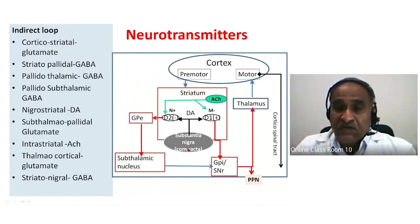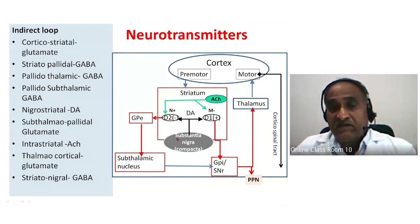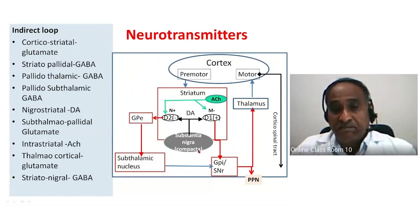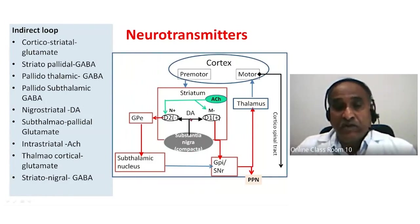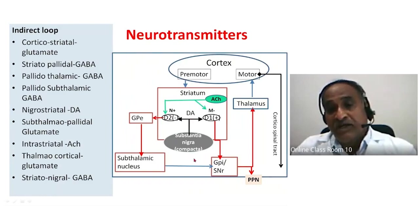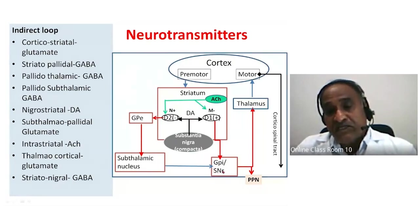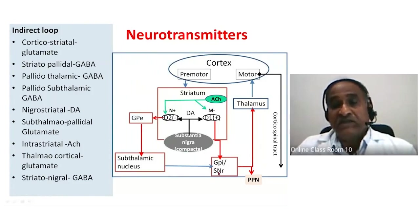The nigrostriatal tract — that is, the substantia nigra — has two components: one is the pars compacta, which contains the dopaminergic neurons, and the other is the pars reticularis, which contains GABAergic neurons.